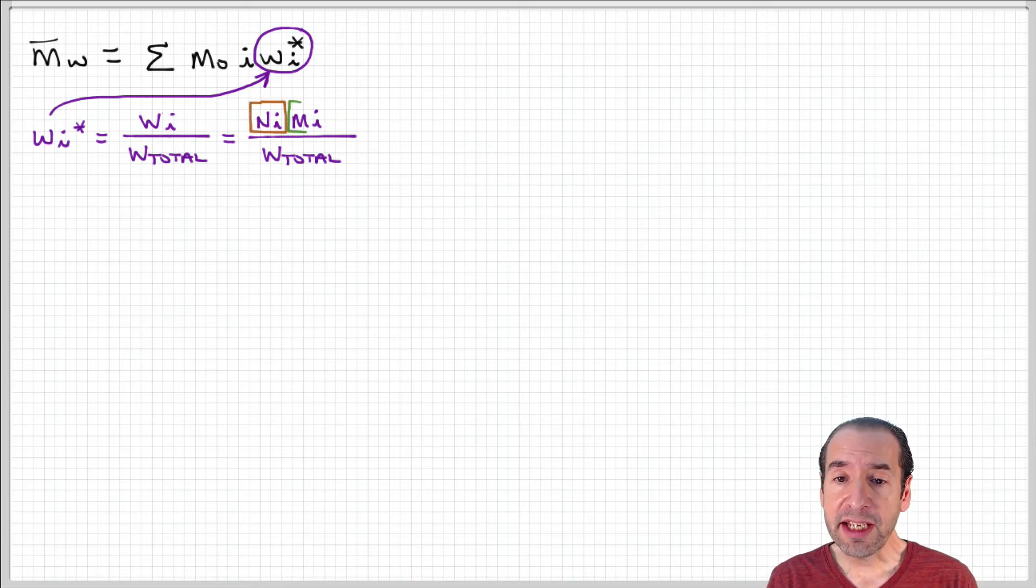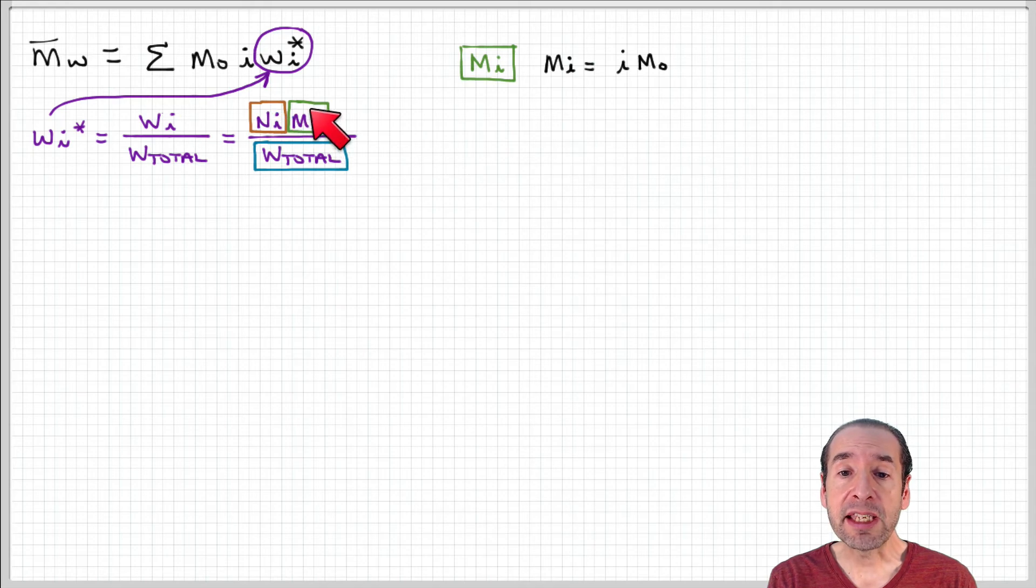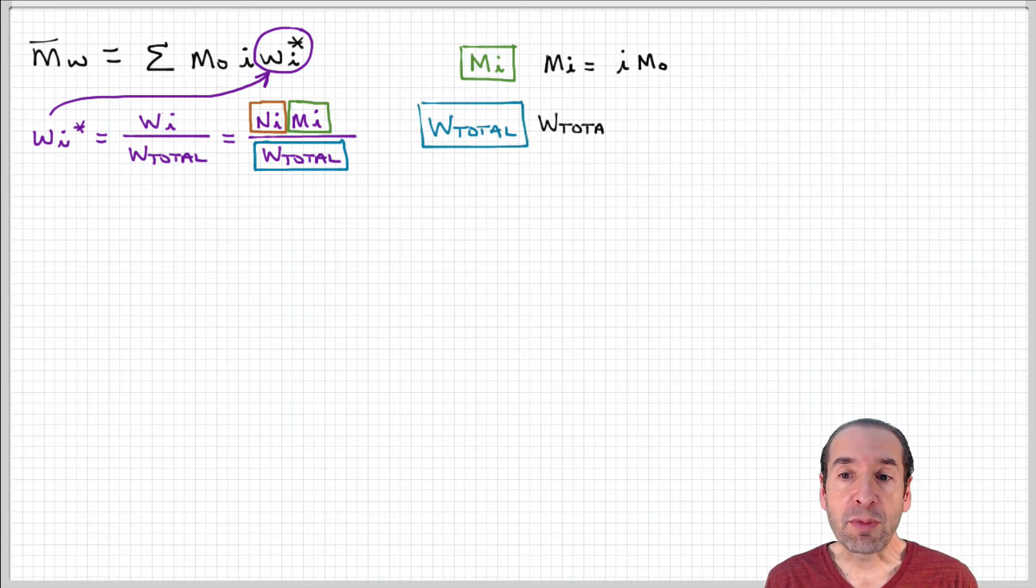We can break this out into several terms. Remember, this is NIMI - that's the total weight of polymer that has length I in our sample divided by the total weight. The molecular weight of polymers of length I is just I, the length of the polymer times the monomer molecular weight.